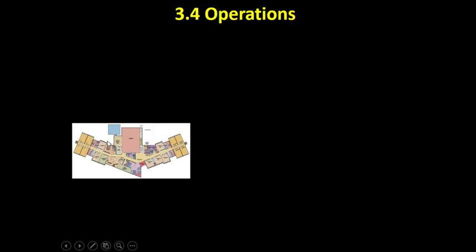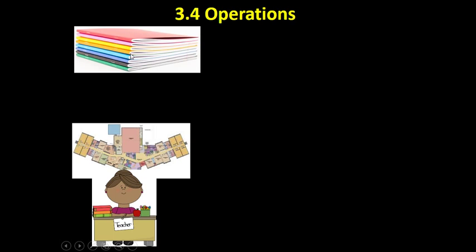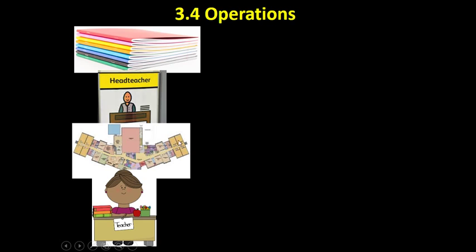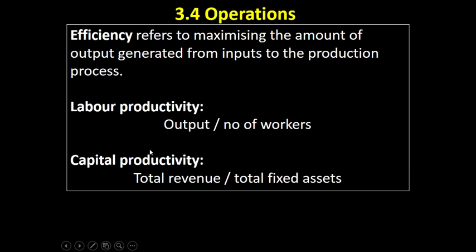It's easy to get confused between businesses and public sector or nonprofit organizations, but they also have to manage their production. In the example of a school: the floor plan represents the land, labor is the teacher, capital includes pens, books, and IT equipment — man-made goods used to produce education — and the senior leadership team is the organizing enterprise factor. The output, of course, is education.